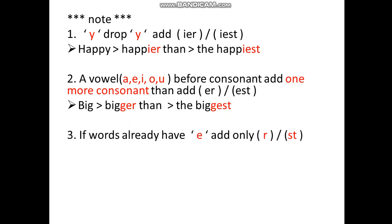Rule three: if a word already ends in 'e', you only add 'r' for comparative and 'st' for superlative. Example: 'nice' — adjective. Comparative is 'nicer than' — it already has 'e', so you only add 'r'. Superlative is 'the nicest' — already has 'e', so you only add 'st'.